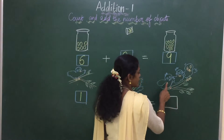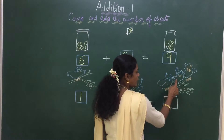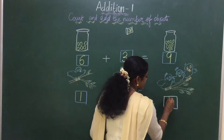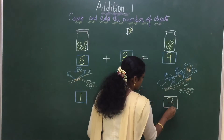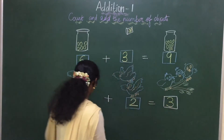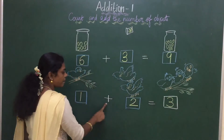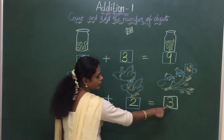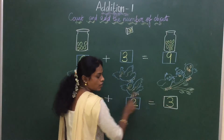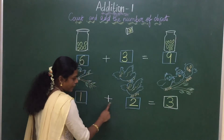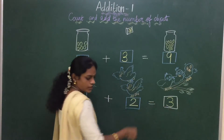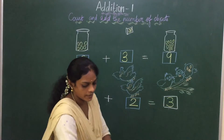Here you can see how many marbles: 1, 2, 3. How many marbles? 3 marbles. So, 1 plus 2 is equal to 3. So children, 1 plus 2 is equal to 3.